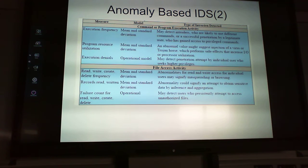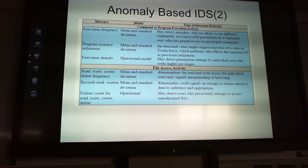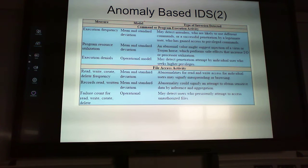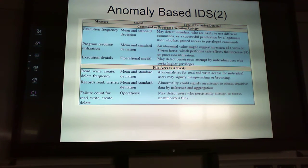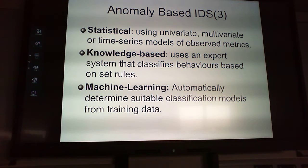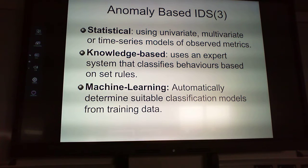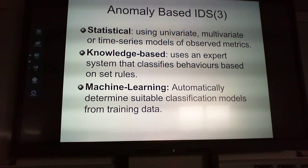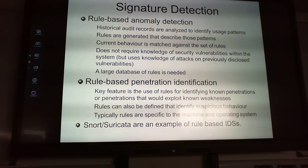Another metric is execution frequency, also modeled with mean and standard deviation. We can detect intruders using different commands, or a legitimate user who has gained access to privileged commands. For every measure there is a model and a corresponding type of intrusion. An anomaly-based IDS may use statistical univariate or multivariate models, time series models, knowledge-based expert systems, or machine learning to automatically determine classification models from training data.